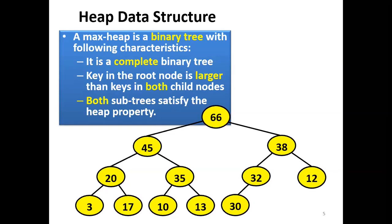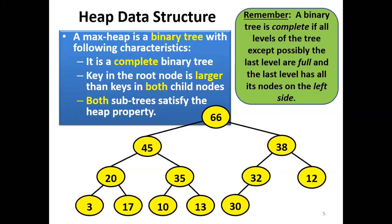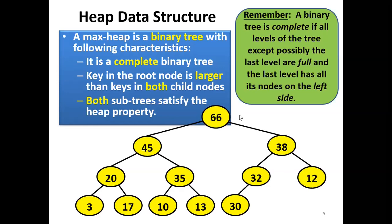A heap data structure is an ordered binary tree that is also complete. Recall from the previous lecture that a complete binary tree has all levels full and all leaf nodes filled from the left-hand side towards the right-hand side. The tree is not full because some leaf elements are missing, but it is complete because all levels from top to the last level satisfy this condition.